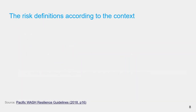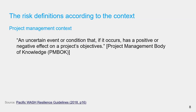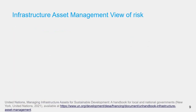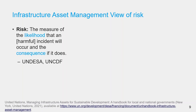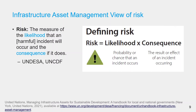Let's look at the definition of risk using a somewhat different domain. In project management, risk is defined as an uncertain event or condition that, if it occurs, has a positive or negative effect on the project's objectives. What we generally worry about is the negative effects. In infrastructure asset management, risk is defined as the measure of the likelihood that a harmful incident will occur and the consequence if it does. So we combine the likelihood or probability of an event and its consequence to define risk.